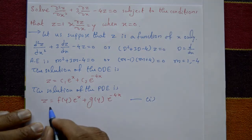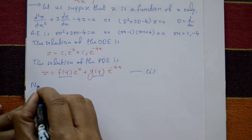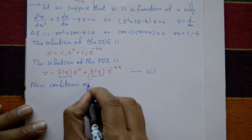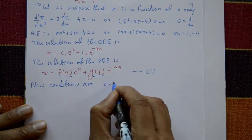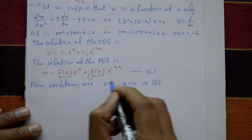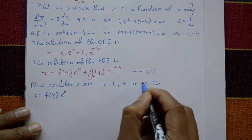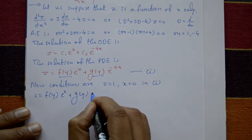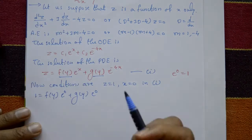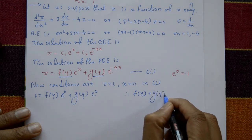Now use the conditions to find f(y) and g(y). Condition one: z = 1 at x = 0. Substituting into equation 1: f(y)·e⁰ + g(y)·e⁰ = 1. Since e⁰ = 1, we get f(y) + g(y) = 1.